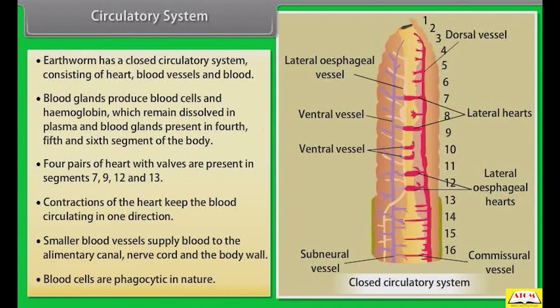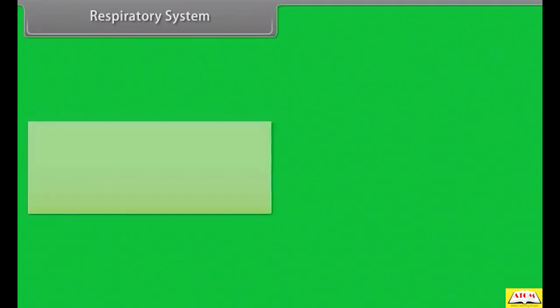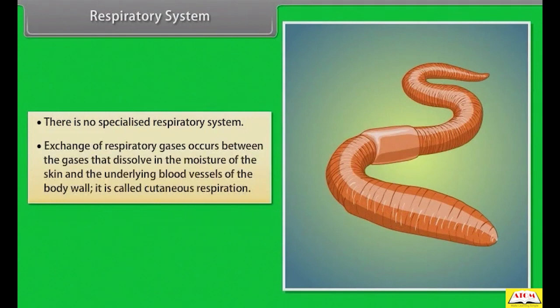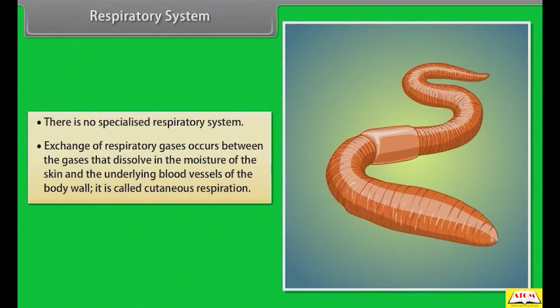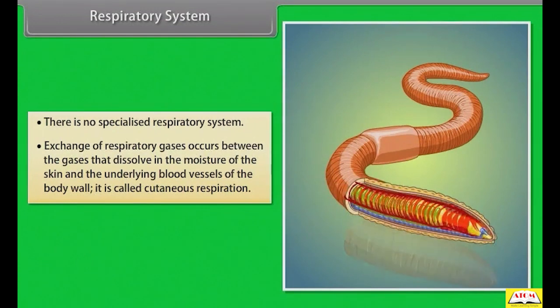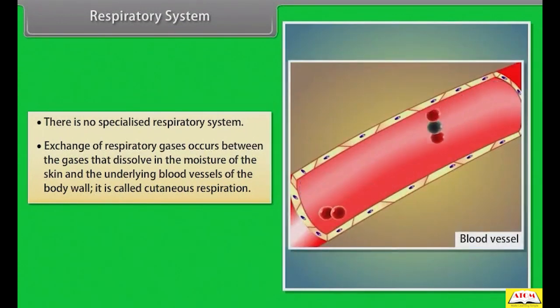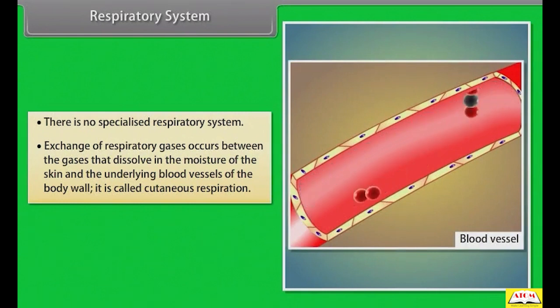Blood cells are phagocytic in nature. There is no specialized respiratory system in earthworm. Exchange of respiratory gases occurs between the gases dissolved in the moisture of the skin and the underlying blood vessels of the body wall. This is called cutaneous respiration.